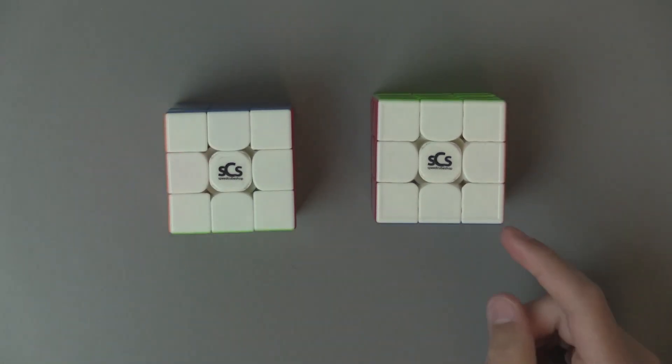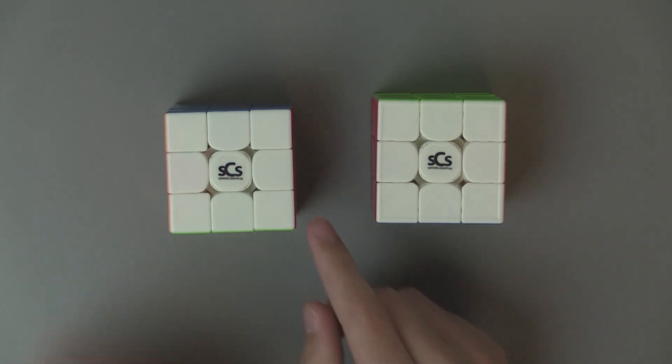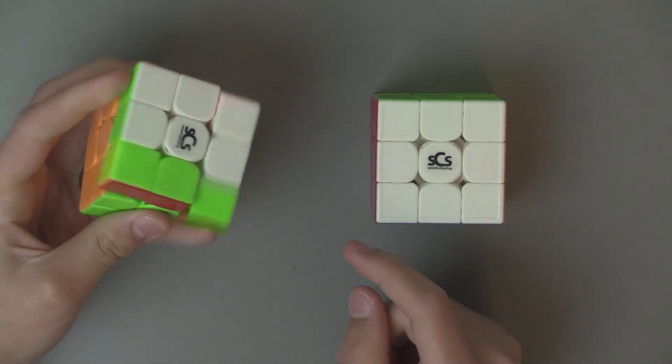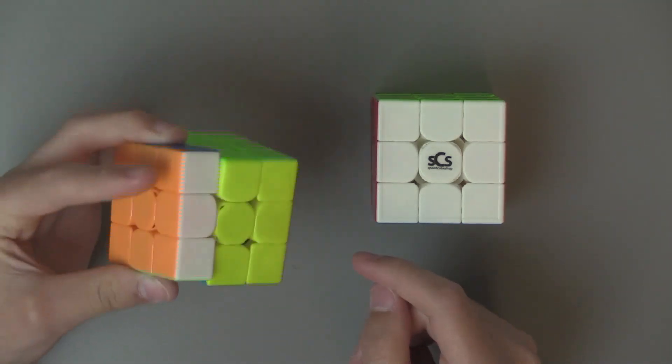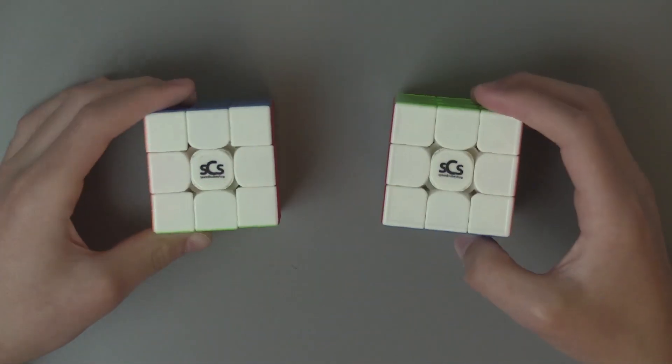I think the GTS-3M, I like the magnets more, because I like the magnets on the WRM, I think it's good for one-handed. But for two-handed, you need slightly stronger magnets, because they aren't really noticeable in solves.